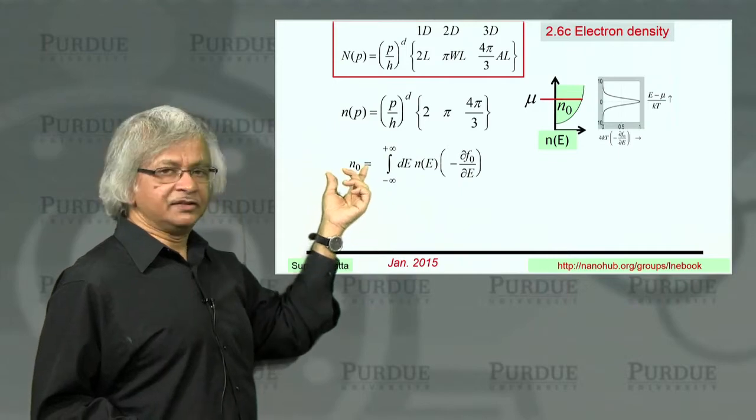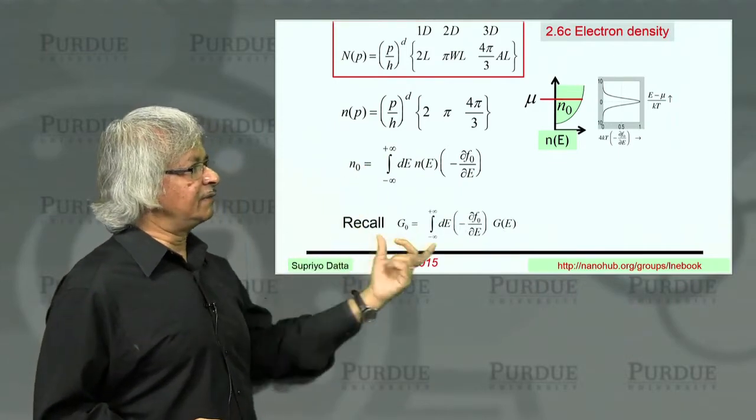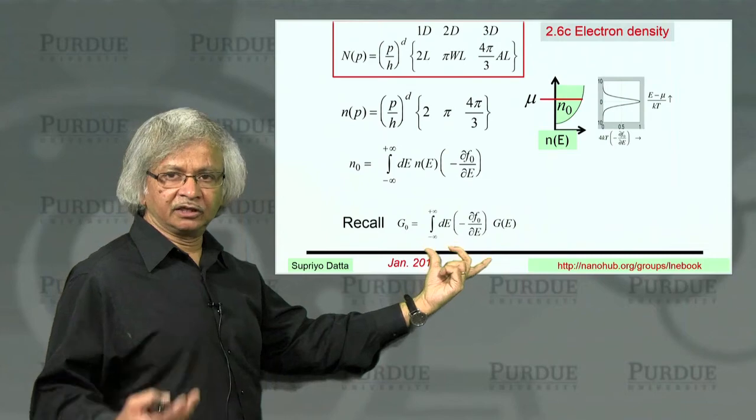And then if you average it over energy, you'll get N zero. And this is, in spirit, much like what we have been talking about with conductance, for example.